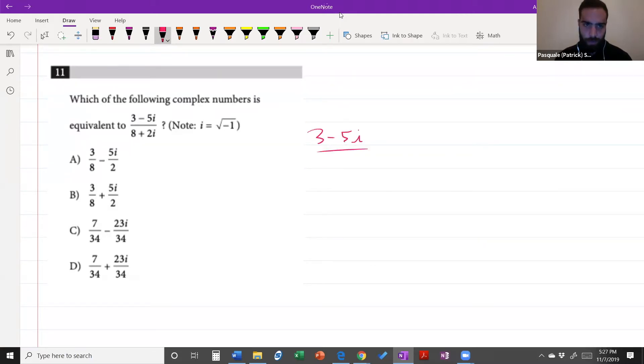Basically we have the fraction 3 minus 5i over 8 plus 2i, so two different complex numbers, and we have to figure out which of the answer choices is an equivalent form to that.